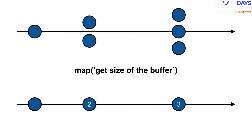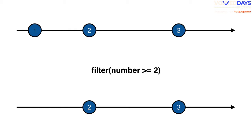We can do a map — go to each buffer and get its size. The first buffer has size three, the second has size two, and the last is one. Then we can filter to get only buffers where the number is greater than or equal to two. So from a stream of three buffers, we get a stream with just two and three. This is just an introduction to how we work with data streams in general.